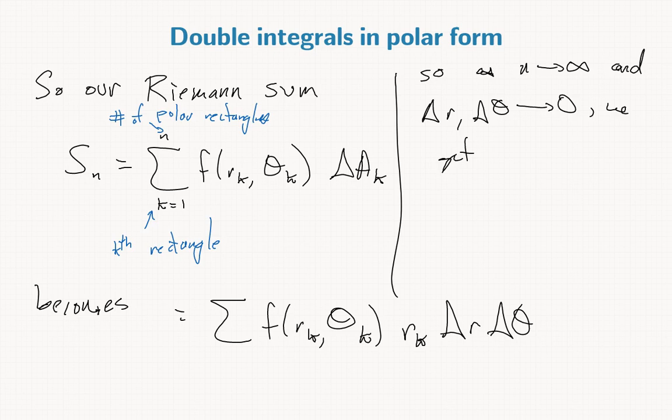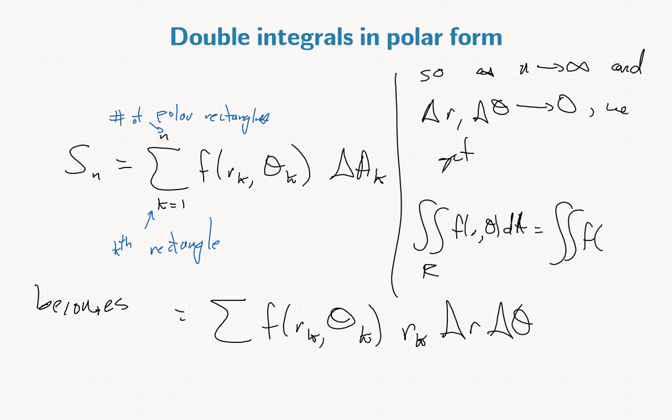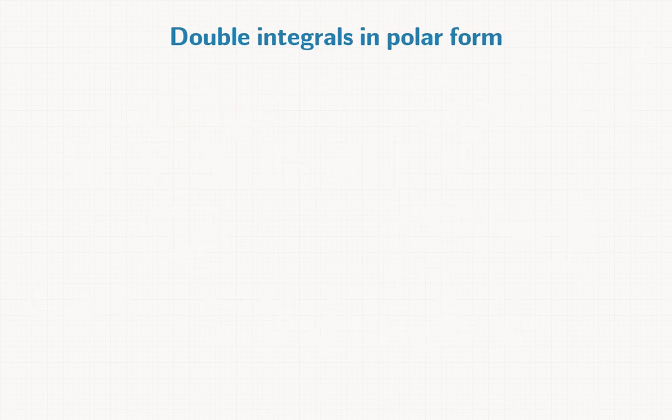We get that our integral for f(r, theta) dA is integral... Let's write that more legibly. Take a good look at this. If our formula for the Riemann sums is sum f(r_k, theta_k) r_k delta r delta theta...